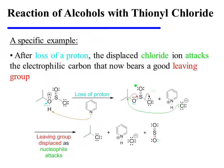At this point, we have a good leaving group, which is displaced by the attack of chloride on the electrophilic carbon of the substrate. As the leaving group is displaced, it fragments into sulfur dioxide and chloride, and isopropyl chloride is the product.